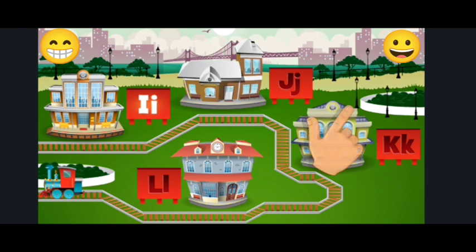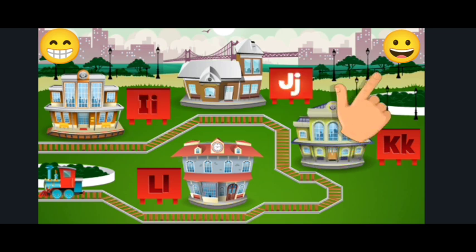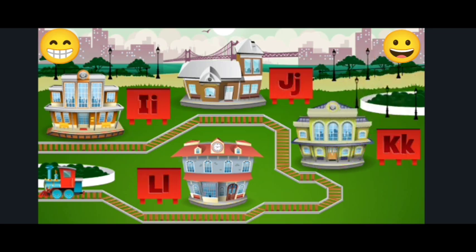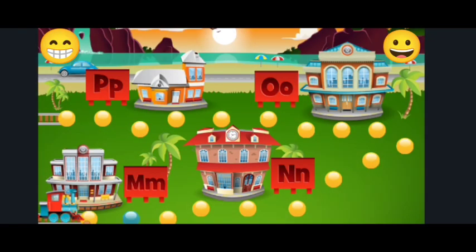I, J, K, L. The Railroad. Slide your finger from the end of the track until the blue dot.